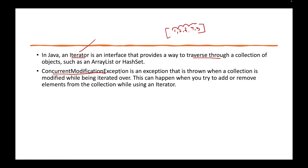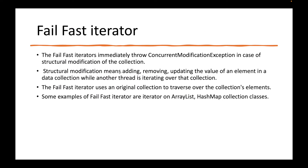We will understand when the concurrent modification exception is thrown, and we will also learn about thread-safe collections. What is a fail-fast iterator? As the name suggests, it will fail fast. As soon as you change something, it is going to fail. It will immediately throw concurrent modification exception if there is a structural modification — that is, if you are adding, removing, or updating the value of the same collection over which you are iterating. So there is one thread iterating over the collection, and another thread trying to manipulate anything in it — that is not allowed, and it will immediately throw an exception and terminate.